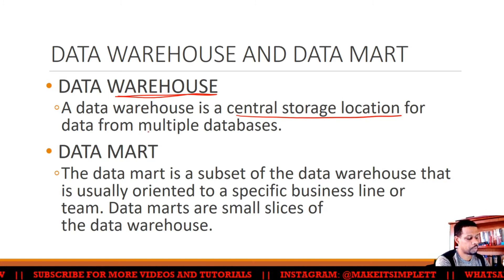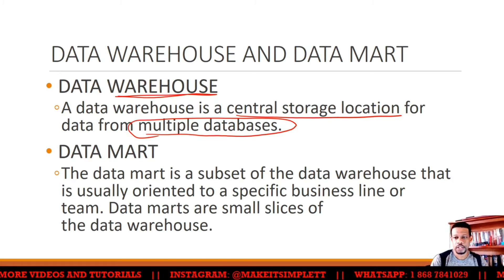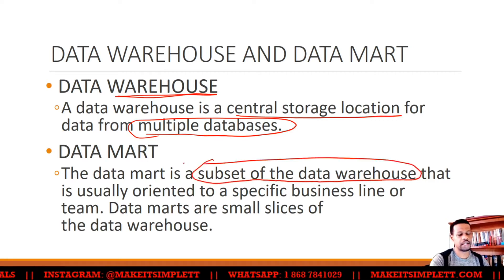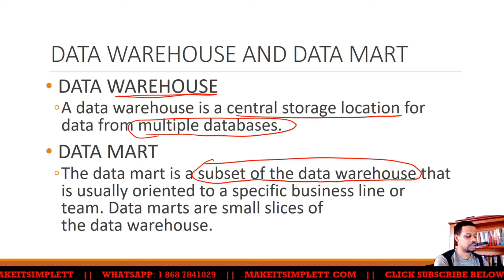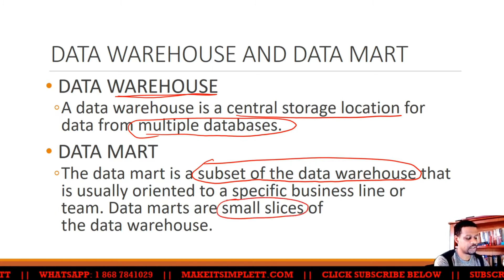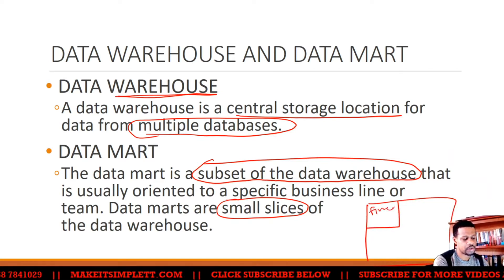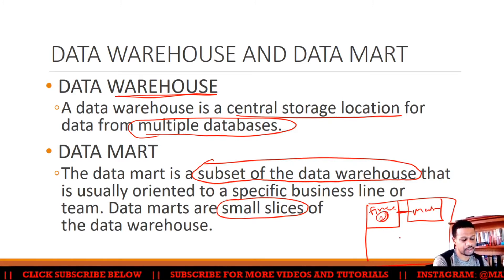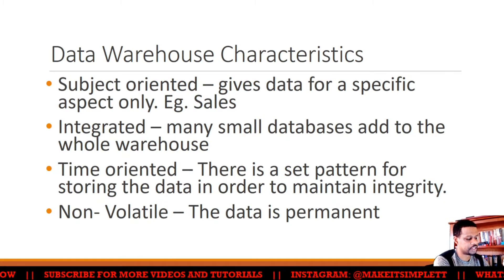A data warehouse is a central storage location for multiple databases. Just like any other warehouse, it's where you store a lot of stuff and organize it. A data mart is a subset of the data in a warehouse — think of it as a room, section, or partition that deals with specific parts of the data warehouse. They are small slices of a data warehouse. You might have a big data warehouse with one data mart for finance and another for marketing.